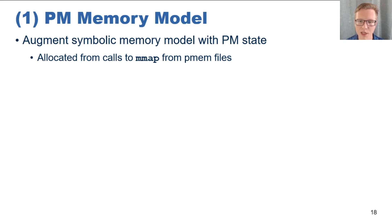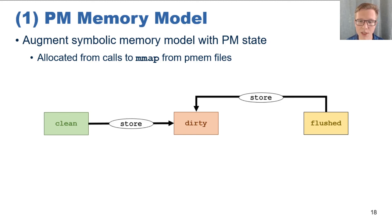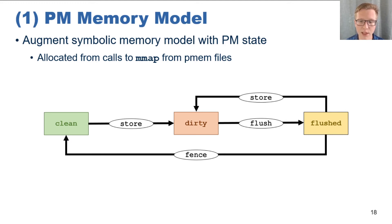The way that persistent memory state works is as a state machine. Every region of persistent memory has one of three associated states: it is either clean, dirty, or flushed. The persistent memory model functions as a state machine, using the different persistency mechanisms as state transitions. For example, stores will make any state dirty, which indicates that it needs to be flushed. A flush then moves persistent memory to being flushed, and then a fence on a flushed state will finally make it clean again. This reflects the example discussed at the beginning of the talk, where we needed to flush and fence an update in order for it to become clean, or made durable.